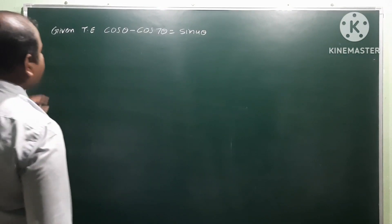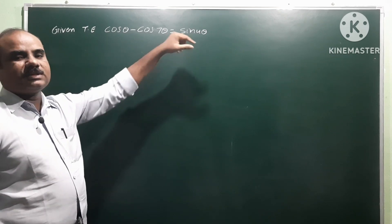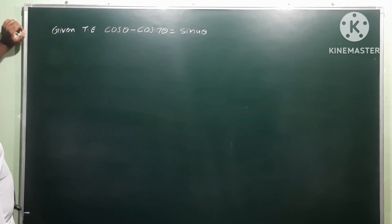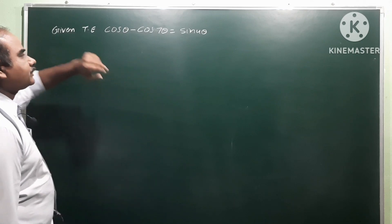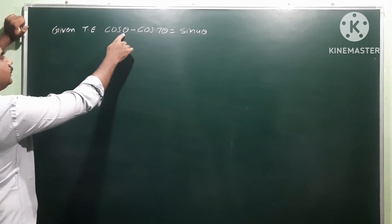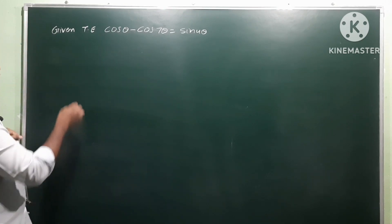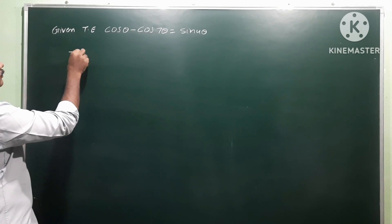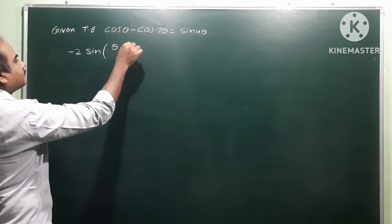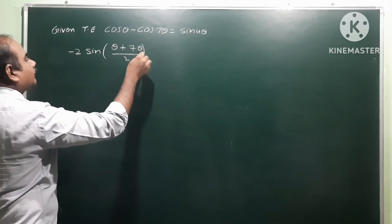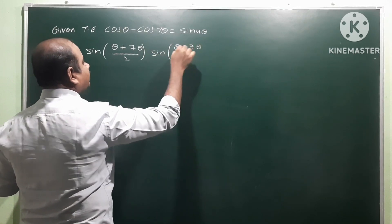Given trigonometric equation: cos θ minus cos 7θ is equal to sin 4θ. We have to find the general solution. The left side is in cos C minus cos D form. Apply that formula where C equals θ and D equals 7θ. The formula gives minus 2 sine of (C plus D)/2 times sine of (C minus D)/2, so that is minus 2 sine((θ + 7θ)/2) times sine((θ − 7θ)/2).